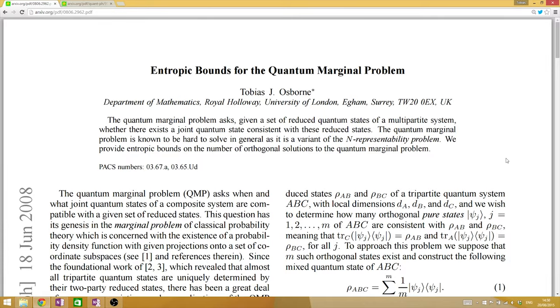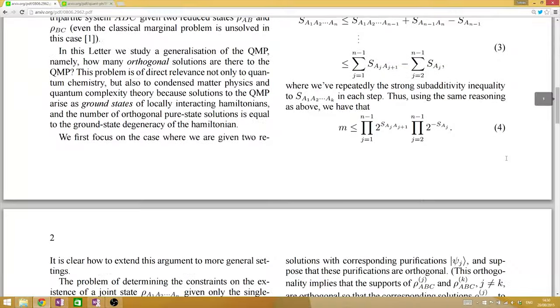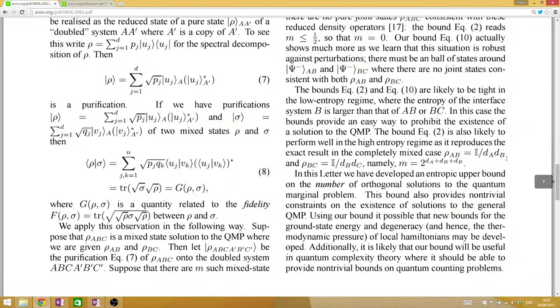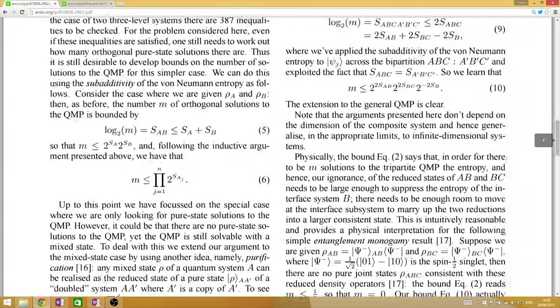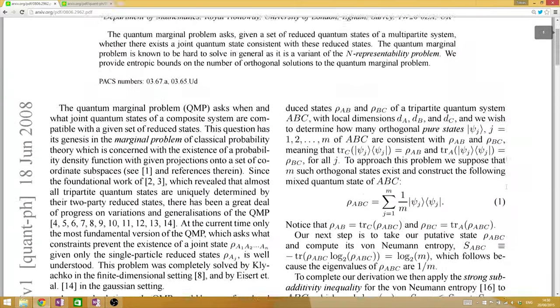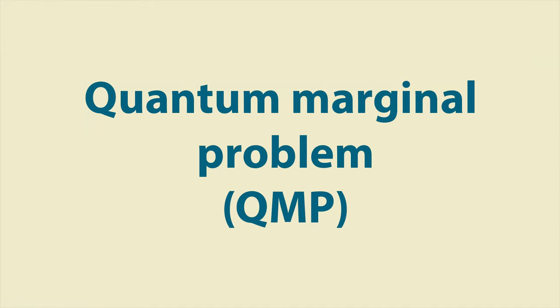The paper in question is one that I wrote in 2008. It's a short three-page paper and the objective of the paper was to derive some bounds on a problem of central importance in quantum information theory called the quantum marginal problem. The quantum marginal problem has its origins in the marginal problem of classical probability theory, which is concerned with the existence of a probability density function with given projections onto a set of coordinate subspaces.